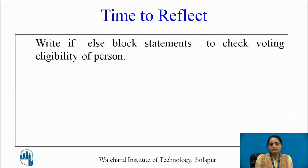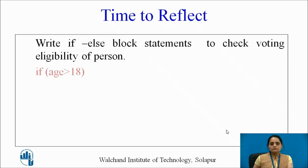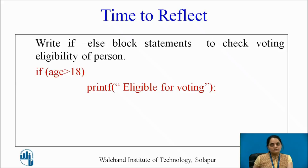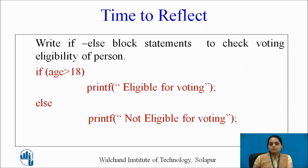Pause the video for a moment and write down the statements. The eligibility is decided based on age: if the age is greater than 18, display that the person is eligible for voting; otherwise display the message that the person is not eligible for voting.